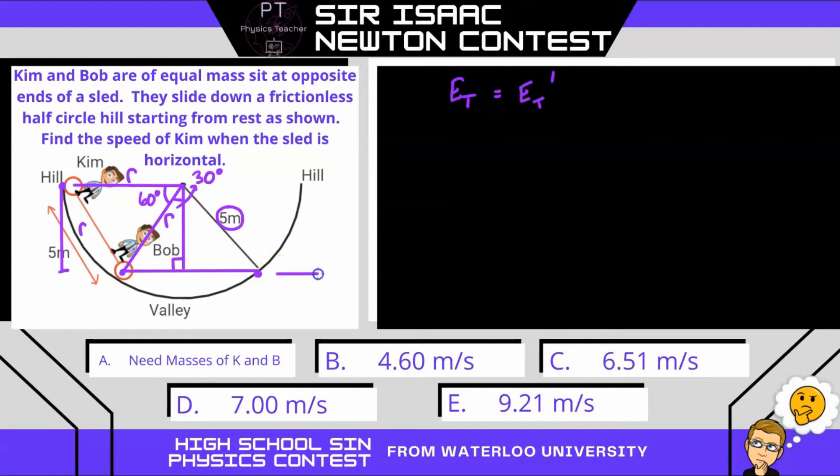Now I'm going to choose right here to be our height of zero. So that means initially Kim has a height of, and we can solve this triangle here, where we know this length is 5 meters, or r, and we know this is 30 degrees, so we can simply call this side to be r cos 30. That means Kim's initial gravitational potential energy is m g r cos 30.